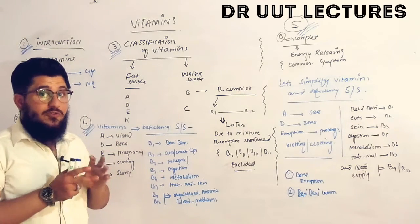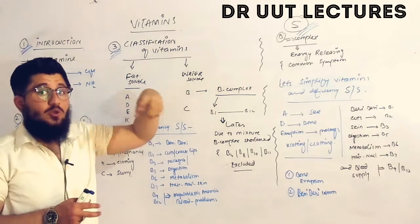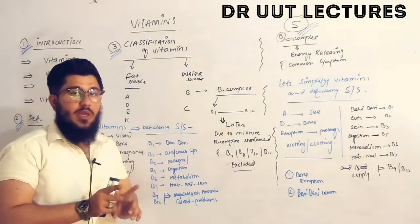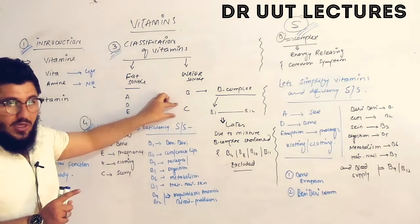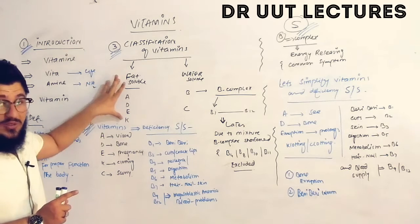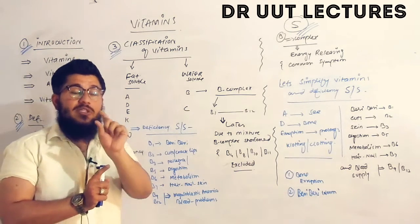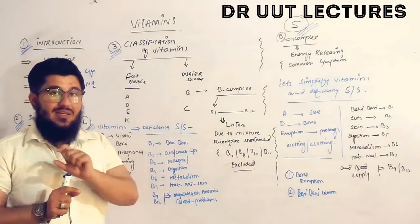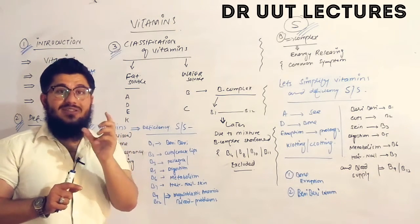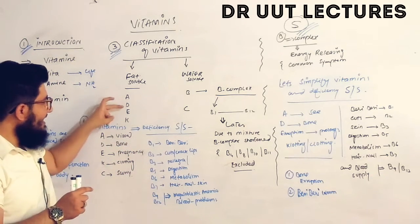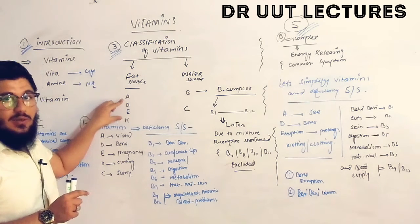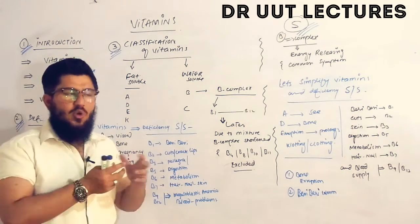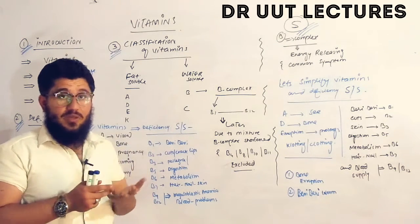On the basis of solubility, vitamins are classified into fat-soluble and water-soluble. Vitamins soluble in fat are called fat-soluble, and those soluble in water are water-soluble. We have four fat-soluble vitamins: A, D, E, and K. A simple acronym to remember them is 'ADEK,' which you can pronounce like 'a deck' — so fat-soluble vitamins are 'a deck.'